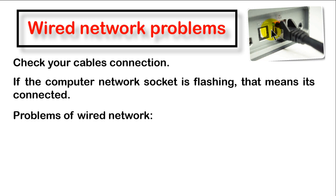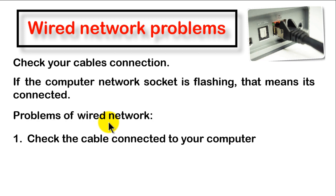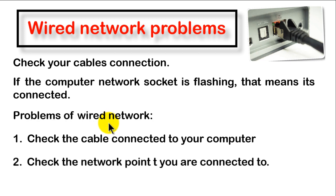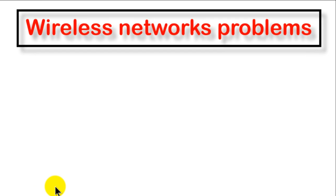Most wired network problems depend on the cable. Check the cable connected to your computer and also check the network point you are connected to — the cable has two sides, one connected to your computer and the other to the network point. Check both sides of your cable. If there is still a problem after checking, you need to tell the IT technician to solve it.